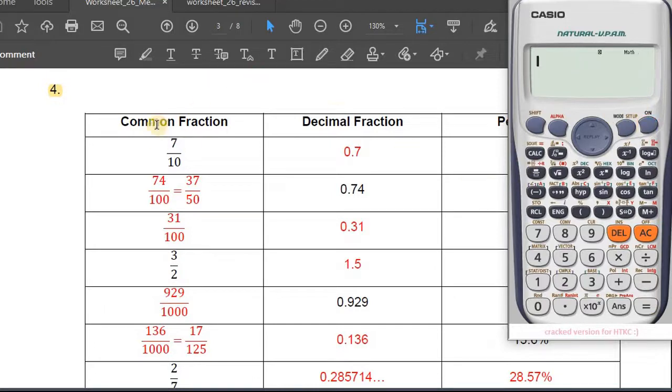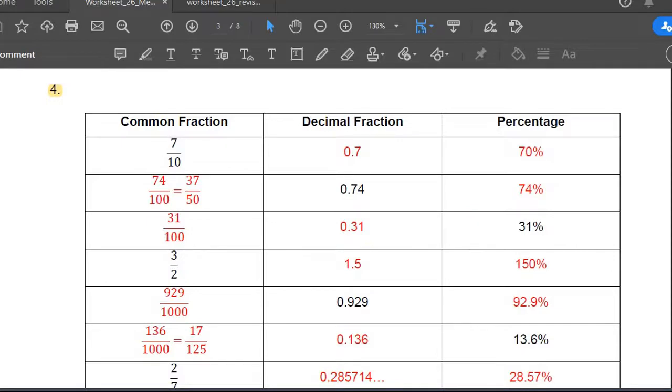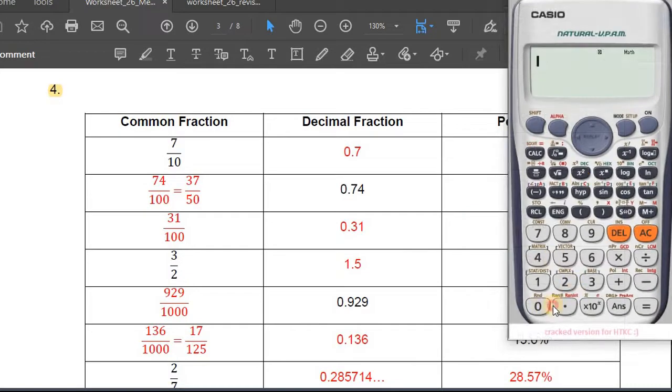Now to move from a decimal to a percentage, you're just gonna times 100. Whatever you're gonna get, like 0.7 times 100 equals 70%.